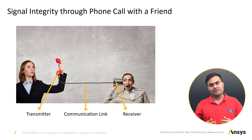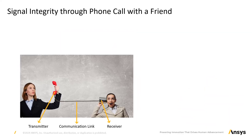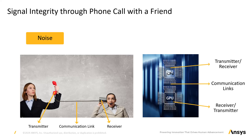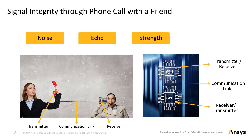Signal integrity refers to how well your voice is maintained with clarity and accuracy during the call. If there is a lot of noise around you while you're talking, it will be difficult for your friend to understand — similarly, in electrical systems, noise can distort signals. Sometimes you might hear echoes during a call, which can make conversation confusing due to signal reflection. Similarly, in electronic systems, signal reflections can lead to distortions. Weak signal strength in a circuit can cause signal degradation.